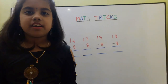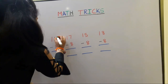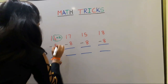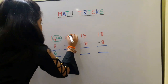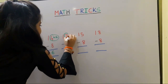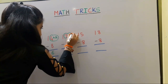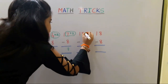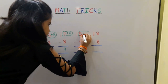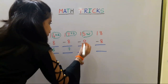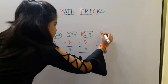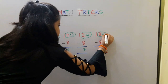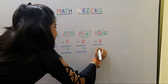Next trick in subtraction. We should add 2 in the 1's place. 4 plus 2 is 6. Next one: 7 plus 2 is equal to 9. Next one: 5 plus 2 is equal to 7. Next one: 8 plus 2 is equal to 10.